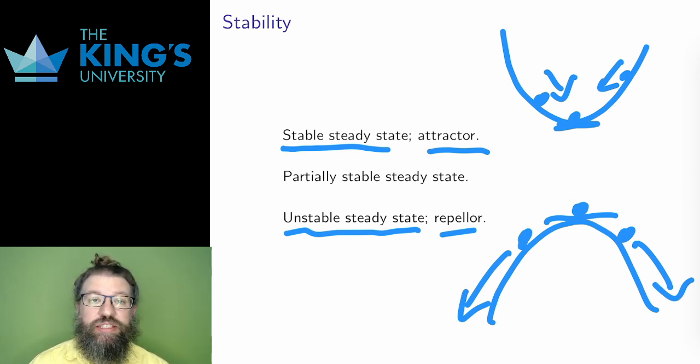These kinds of steady states are often transitions, tipping points, between two different kinds of behavior in a system. Finally, a mix of the two can happen. The steady state can be stable from above, but unstable from below, or vice versa. And these are called partially stable steady states.